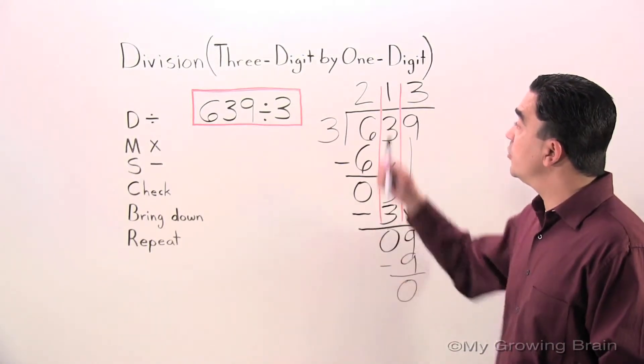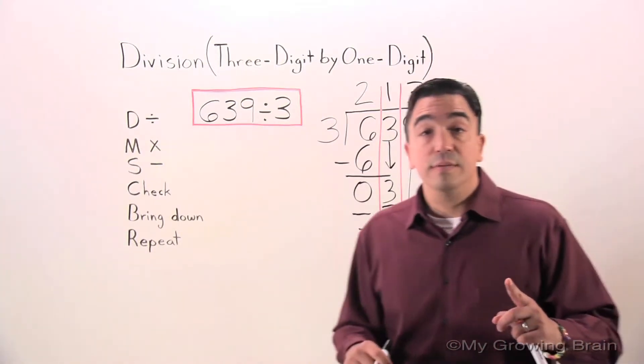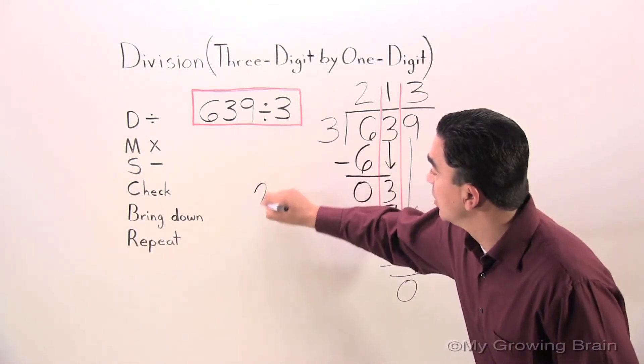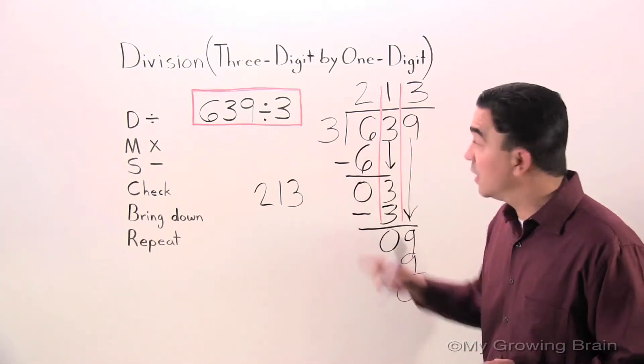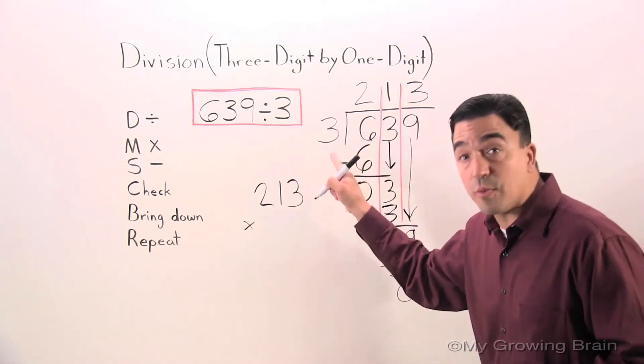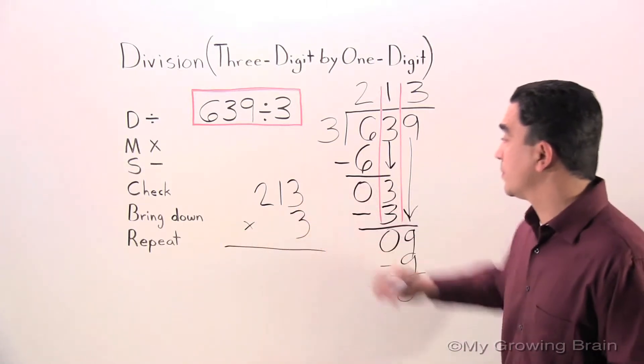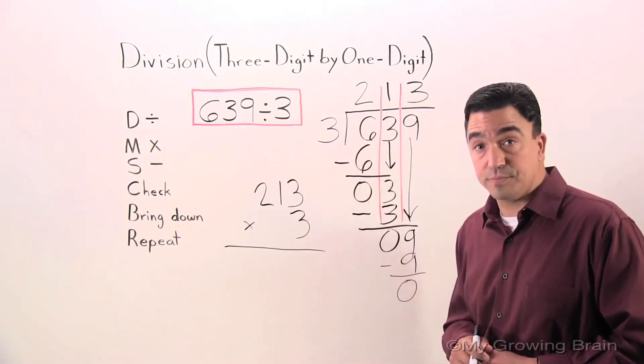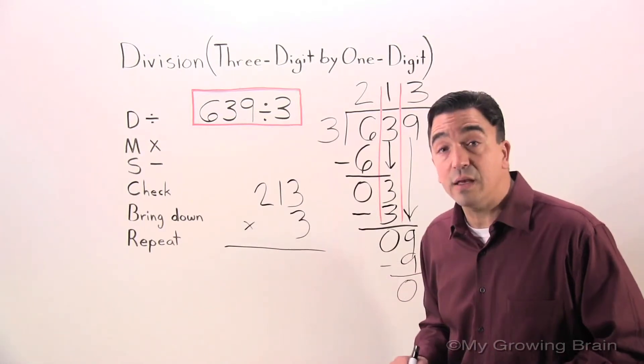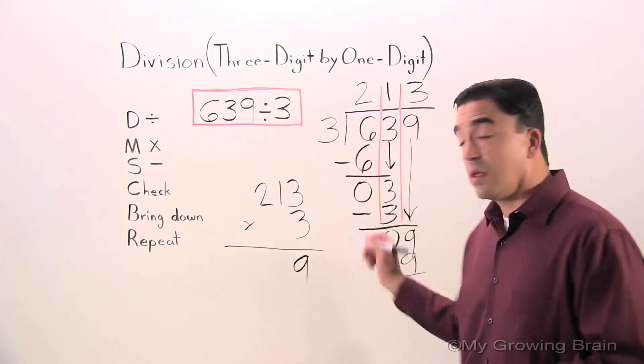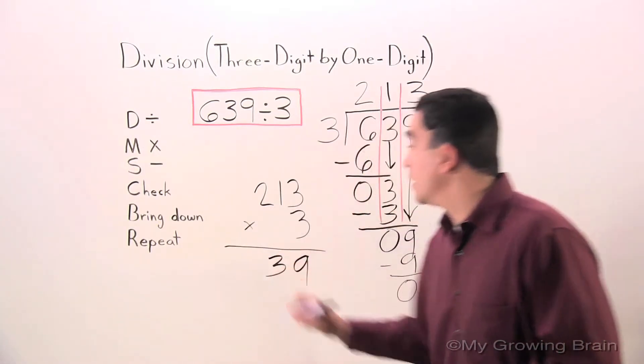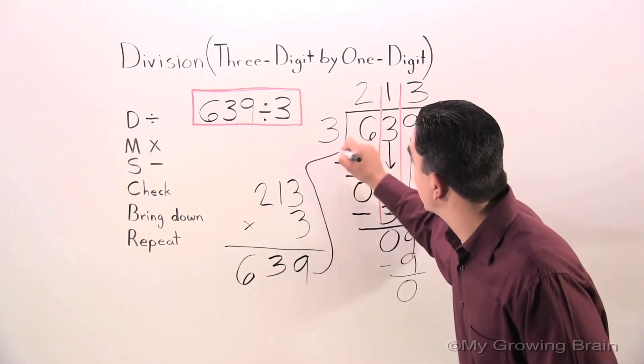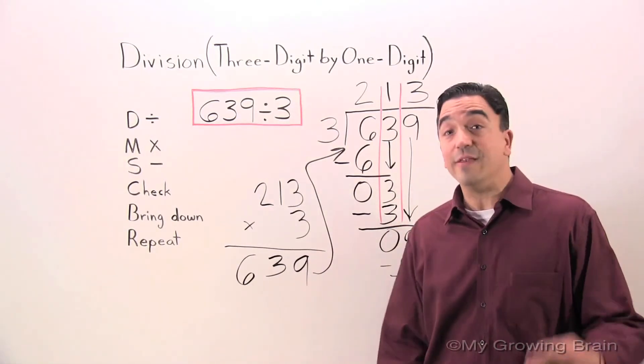We got a quotient of 213. There's still one more step. You've got to check your work. So I have 213, my quotient, times the divisor, 3. Now, if I do this correctly, the answer should be the dividend. Are you ready? Let's do it. 3 times 3? 9. 3 times 1? 3. 3 times 2? 6. What do you know? Same answer. We did do it correctly.